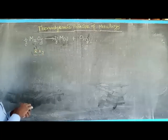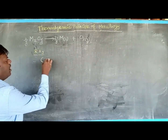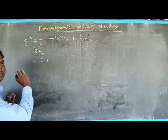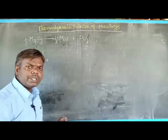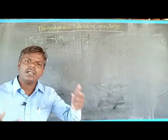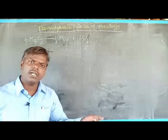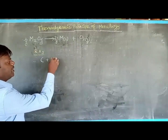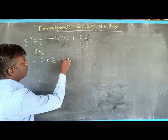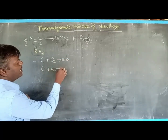Reducing agent one: we can consider carbon as reducing agent for this purpose. If carbon is used as reducing agent, carbon is either converted into carbon monoxide or carbon dioxide.